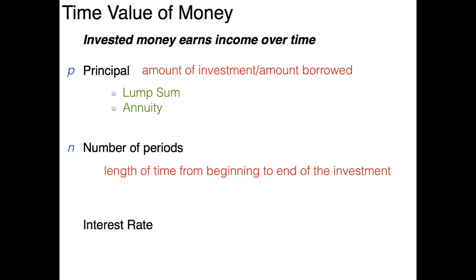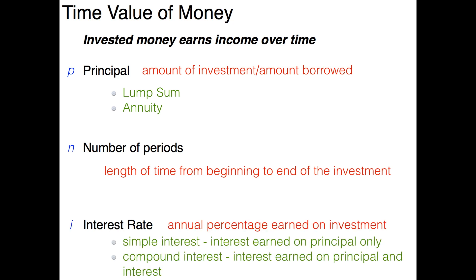The third component of the time value of money concept is the interest rate. This is the annual percentage earned on the investment. Notice the word 'annual' — interest rates are typically given on an annual basis, so when you're told an interest rate it typically means a yearly rate. We'll talk more about compounding later.